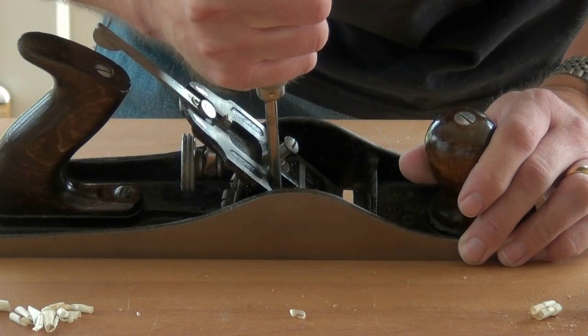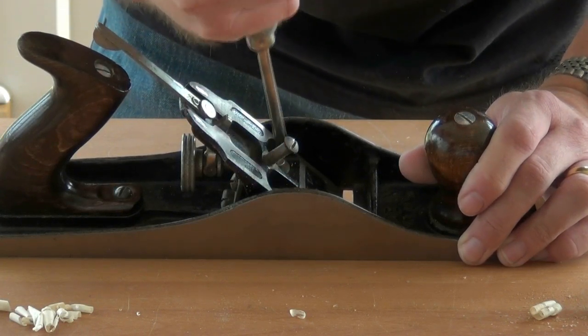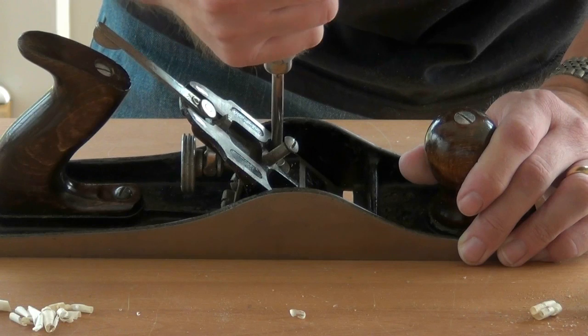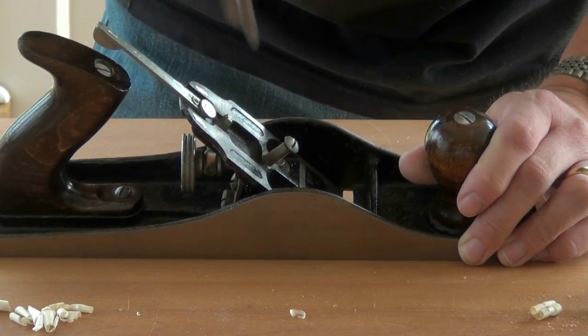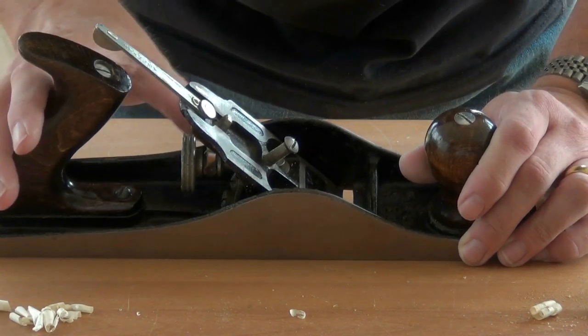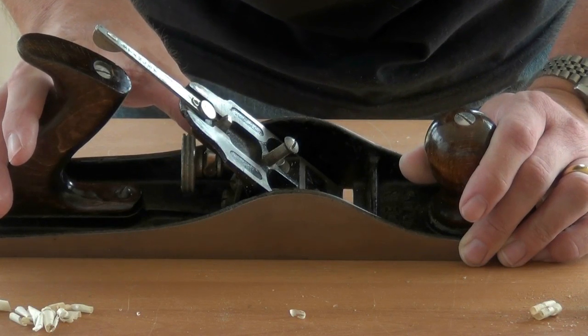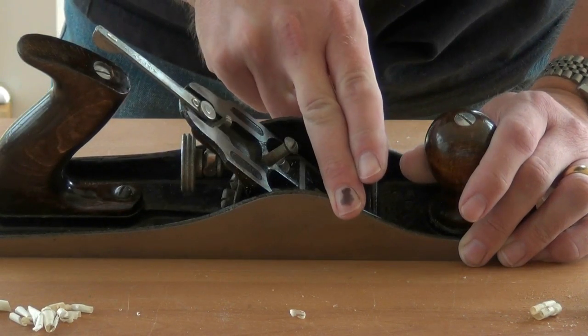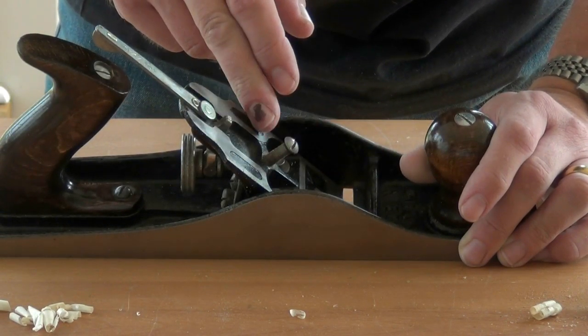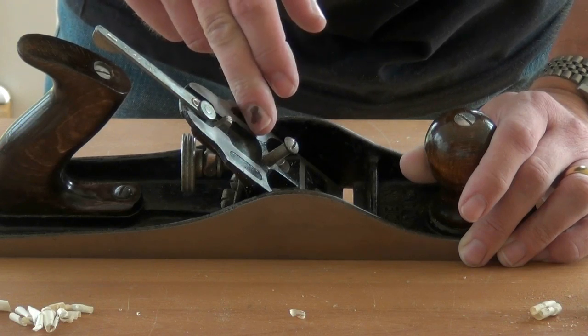Tighten up the machine screws holding the frog down. Don't over-tighten them because it is a casting and we can deform the shape of either the main body or the frog by over-tightening, and we can in fact crack the castings.